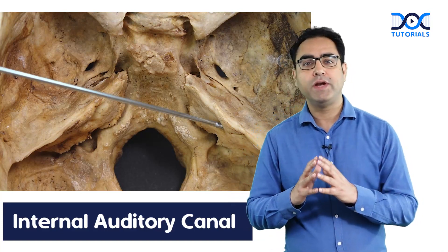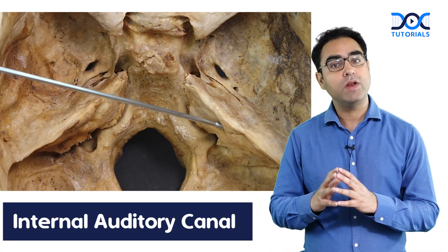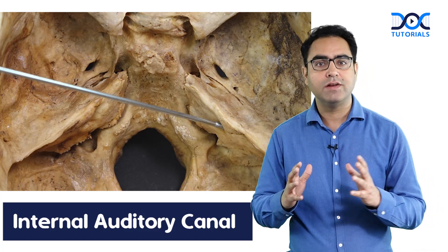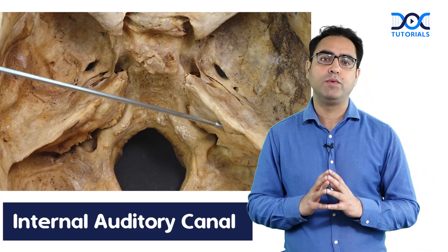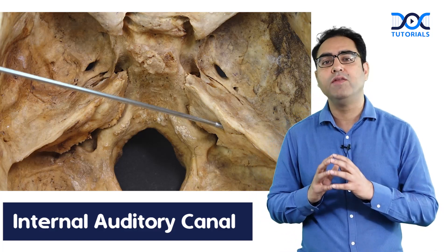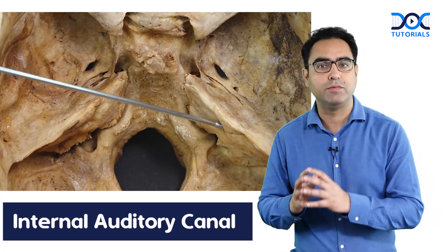The 8th nerve has got three divisions: number 1, the cochlear division; number 2, superior vestibular; and number 3, inferior vestibular division.